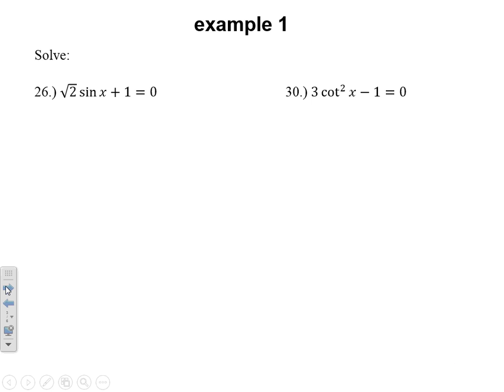Our first type of example, it says to solve. In problem 26, we're trying to find an angle so that √2 times the sine of this angle plus 1 will equal 0. The first step is to isolate that trig function so we can draw some reference triangles. I'm going to subtract 1 and divide by √2. The sine of the angle equals negative 1 over √2. I'm going to leave it unrationalized because it's helpful for drawing triangles.